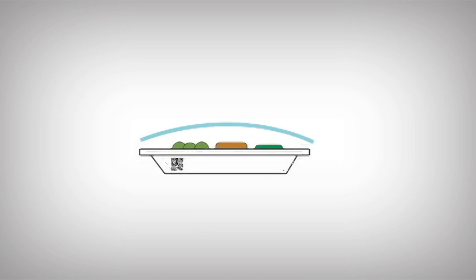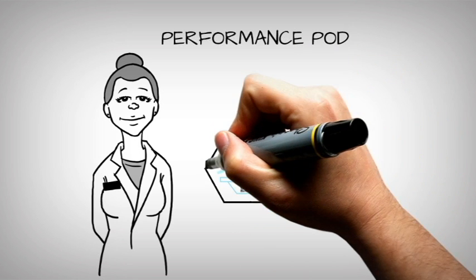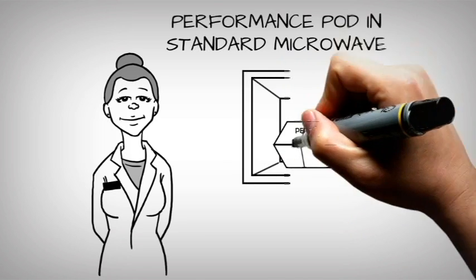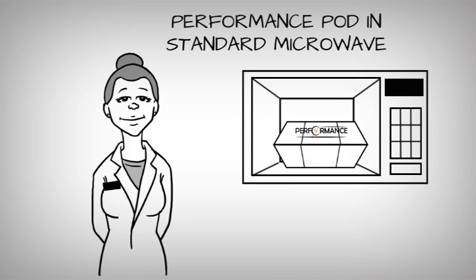The Performance meal is frozen and delivered to Erna's nursing home. At the nursing home, Erna's meal is unpacked and placed in a specially designed Performance pod. This pod is inserted into a standard microwave oven for the appropriate reheating of Erna's meal.